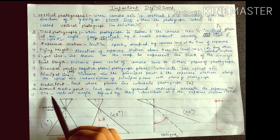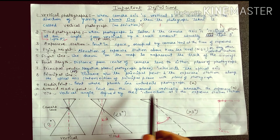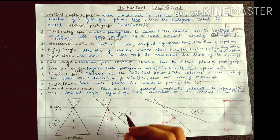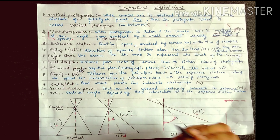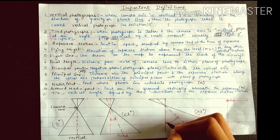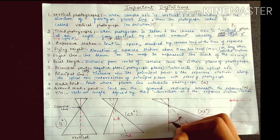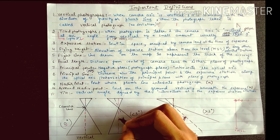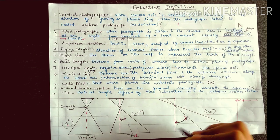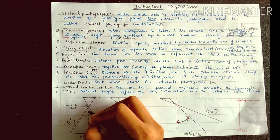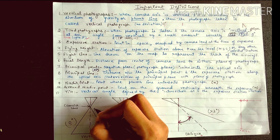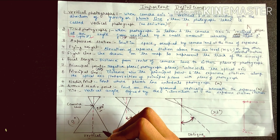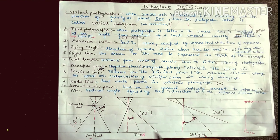Tilt is the vertical angle defined by the intersection at the exposure station between the camera axis and the plumb line. If tilt is less than 3 degrees it is a tilted photograph, if more than 3 degrees it is oblique, and if tilt is 0 degrees it is called vertical photography.